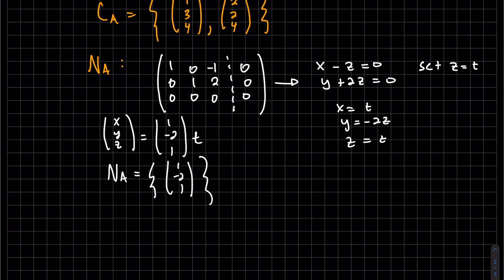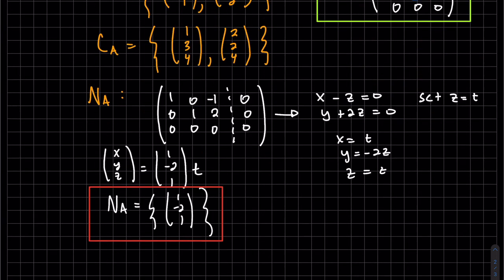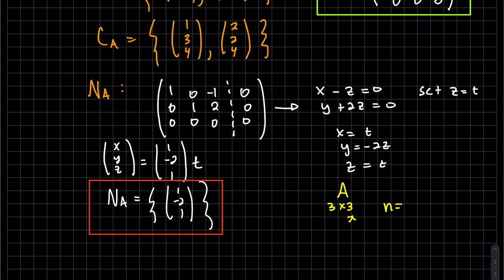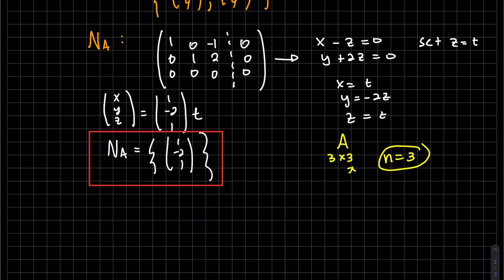And we don't need our T in there. Also, before I go on, I actually usually do this before I find my null space. This is a three by three. My N is three, and this is actually part B.